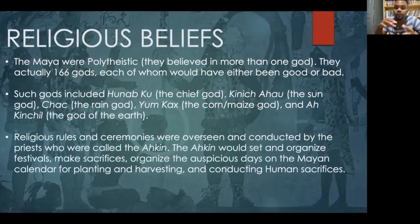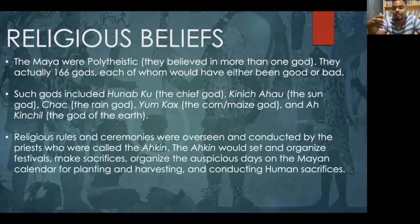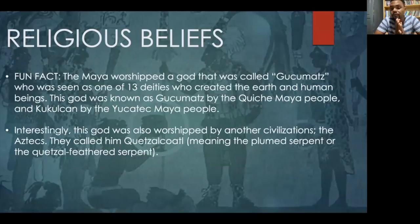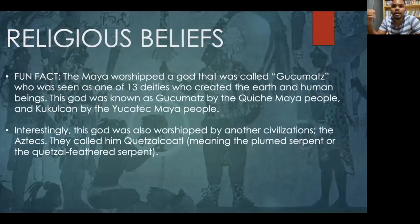Religious rituals and ceremonies were overseen and conducted by priests called the Akin. The Akin would set and organize festivals, make sacrifices, organize the auspicious days on the Mayan calendar for planting and harvesting, and conduct human sacrifices. The Mayans also worshipped a god called Gukumatz, seen as one of 13 deities who created the earth and human beings. Most Mayans, especially the Yucatan Mayans, believed in the concept of 13 deities coming together to form the earth and human beings.